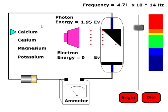Actually, there are three buttons. There's the choice of the metal, there's the slider that controls the frequency of the source, and then this bright and dim button.